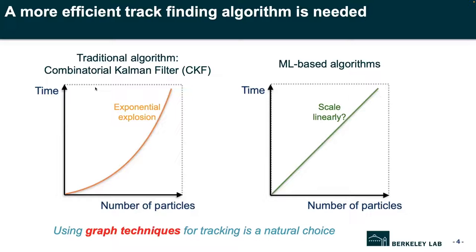Traditionally, we use an algorithm called the Combinatorial Kalman Filter, the CKF, which generally performs a trajectory fit to all possible combinations. As you can imagine, due to its combinatorial nature, it can be very computationally expensive, especially as the number of particles increases. Therefore, there are a lot of recent efforts looking for an alternative that uses machine learning, with the goal that computational cost should scale approximately linearly with the event size. Given the geometric nature of particle tracks, it's very natural to consider using graph techniques for track reconstruction.